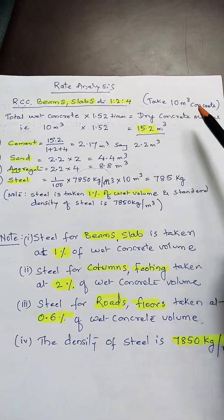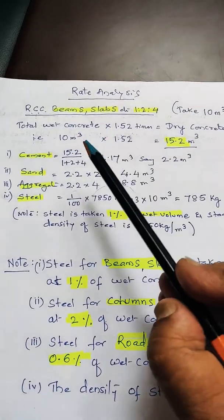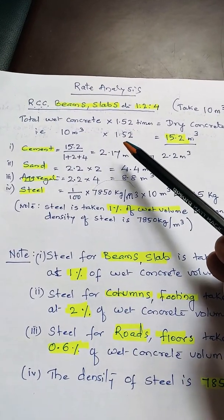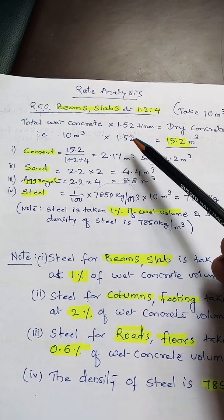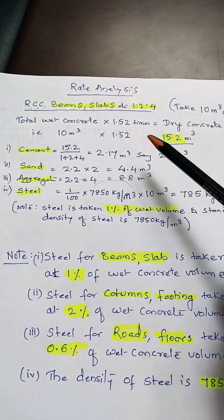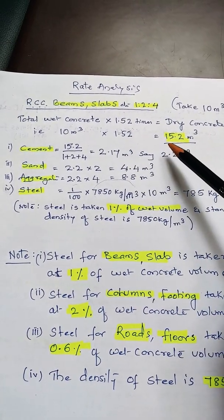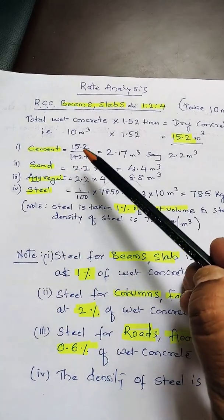We will take for example 10 meter cube concrete and find out the materials. Again, the wet volume is multiplied by 1.52 times - this is the standard multiplication ratio to get the dry volume. So 10 × 1.52 comes out to 15.2 meter cube.